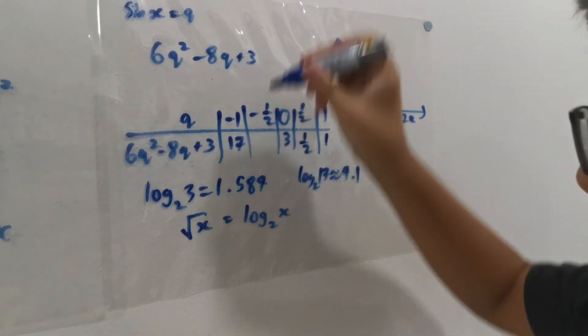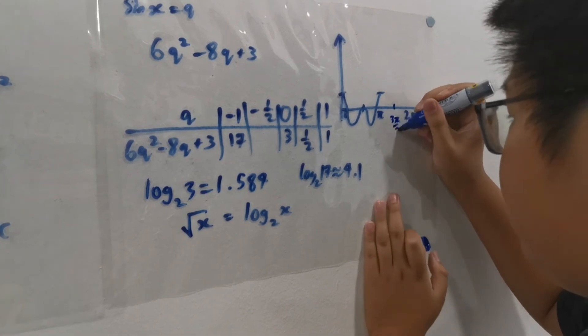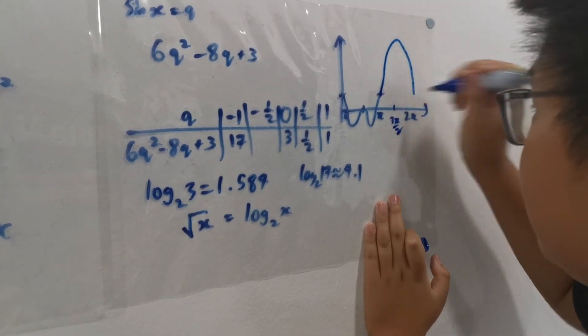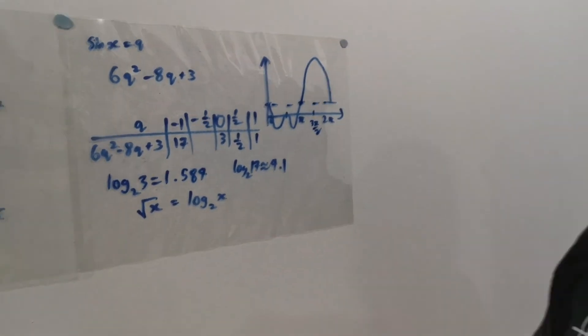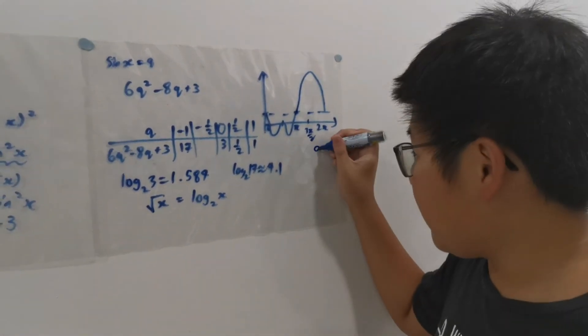And it returns a really big positive value at 3 pi over 2. So we'll draw it like this, making sure that these 3 points are in the exact same place as with any sine graph. This is actually option A.